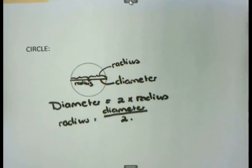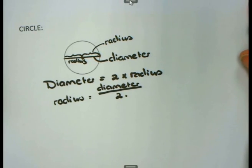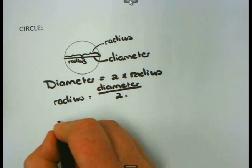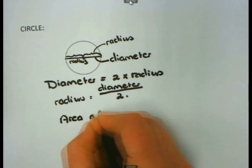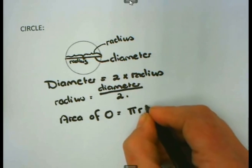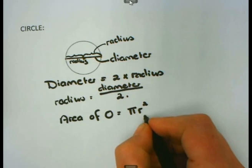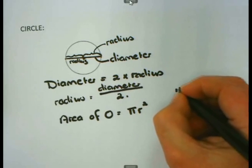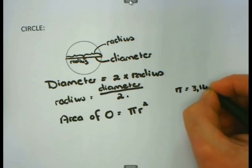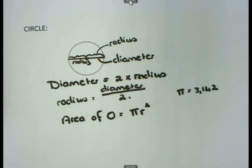It is very important that you always check what you were given — the diameter or the radius. The formula to calculate the area of a circle is pi times radius squared. There is no diameter in this formula — I must have the radius. The value of pi is 3.142. Always look at the instructions to see what value you are supposed to use for pi.